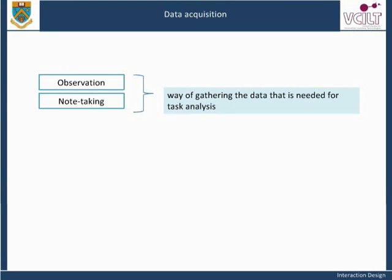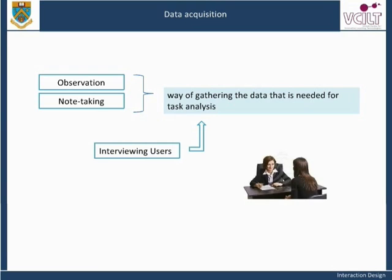Another way of getting such information is by interviewing users — that is, the people who perform the tasks being studied. Responses can be noted by hand or recorded using a tape recorder. Each of these techniques has advantages and disadvantages. Interviewing is often more efficient than observation. As people talk about their work, they use a particular vocabulary that expresses their understanding of what they do and how the work is done, which can usefully be adopted in any computer support for their tasks. You find out how they think they perform their jobs and the things that they perceive as being important.